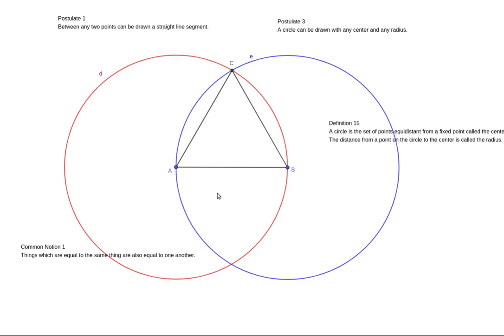What we've shown, then, is that all of our line segments—AC, BC, and AB—are all equal to one another,